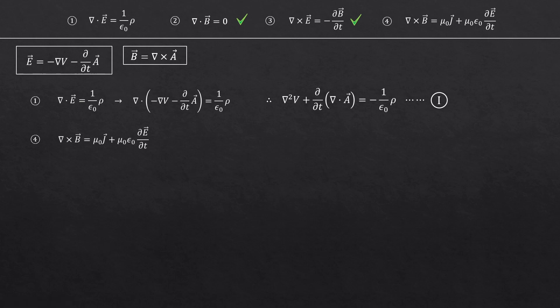Now, let's look at the fourth Maxwell's equation. Again, I'll replace the magnetic field with the curl of the vector potential and electric field with this.